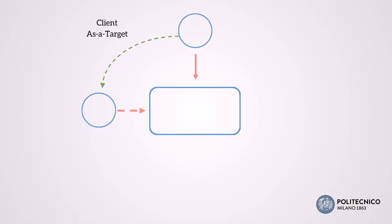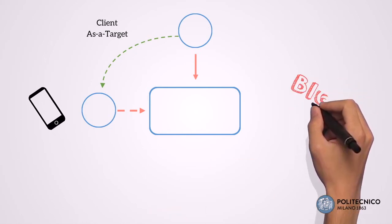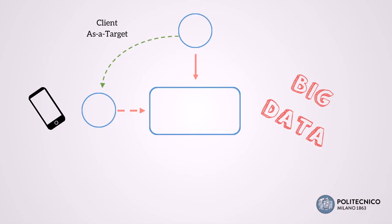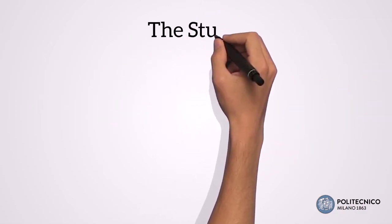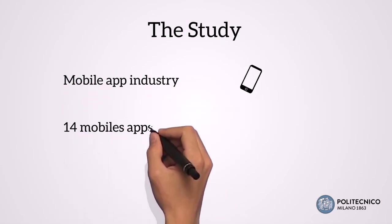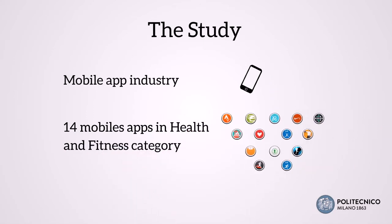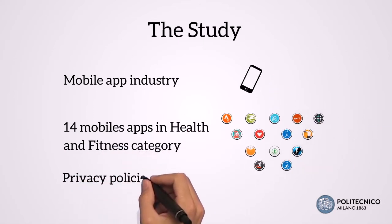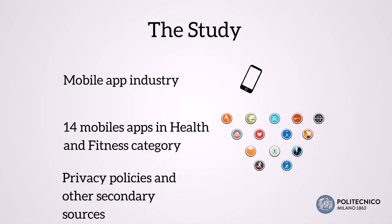This market structure is now being challenged by an extremely relevant trend: the diffusion of smartphones, which allows companies to gather a huge amount and variety of data through the sensors embedded in smartphones. This research is empirically grounded in the mobile app industry, focusing on 14 mobile apps in the health and fitness category, which have been analyzed through their privacy policies, in order to understand if and how they can leverage big data.